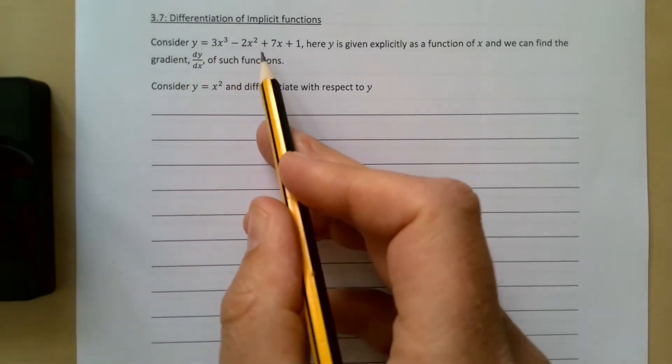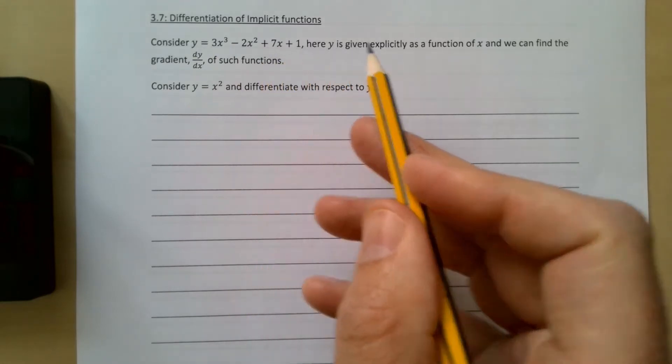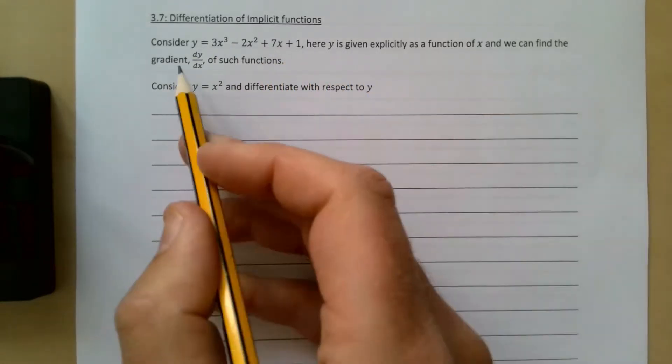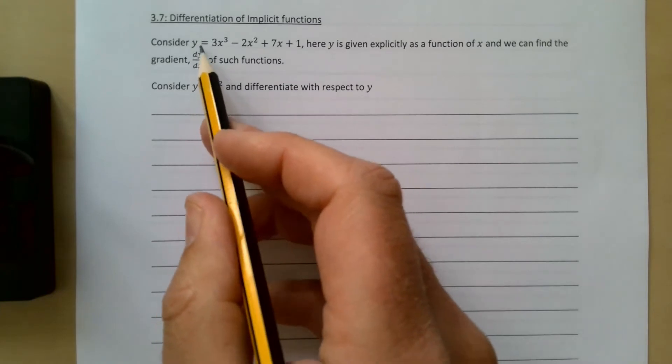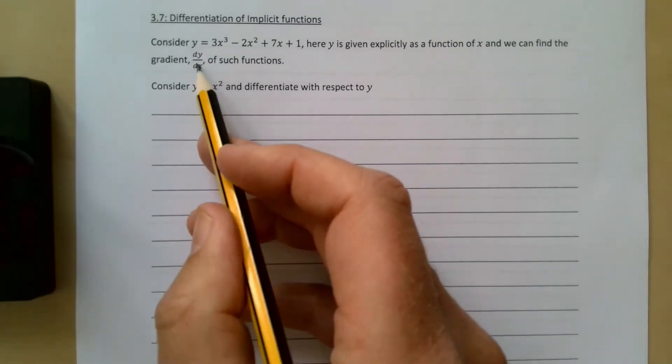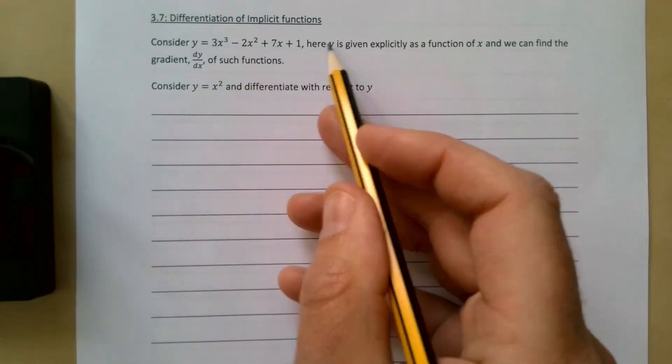Consider y = 3x³ - 2x² + 7x + 1, where y is given explicitly as a function of x, and we can find dy/dx. That's straightforward. We differentiate each term to get dy/dx = 9x² - 4x + 7.